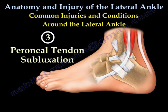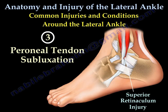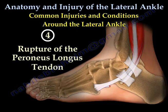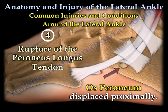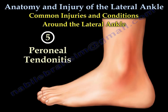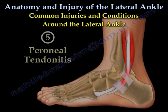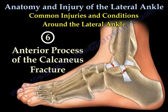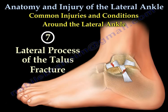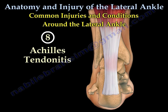The third type is peroneal tendon subluxation. The fourth type is a rupture of the peroneus longus tendon, where the os peroneum is displaced proximally. The fifth type is peroneal tendonitis. The sixth type is a fracture to the anterior process of the calcaneus. The seventh type is a fracture to the lateral process of the talus. The last type is Achilles tendonitis.